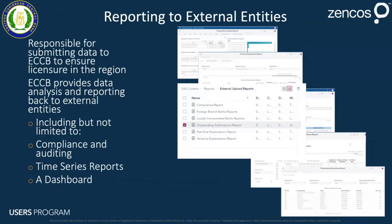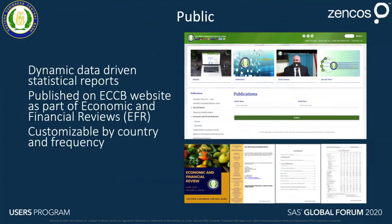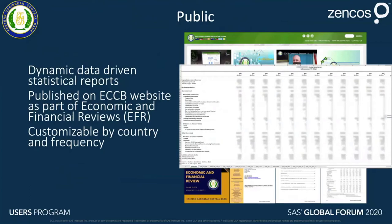For the public, we provide reports through the ECCB website at various frequencies and by country. Since we have eight member countries, we have reports available for each at various frequencies, with dynamic data-driven reports created for them. Now I'll let Ben explain how we provide surveillance data to the IMF, a critical partner of ours.